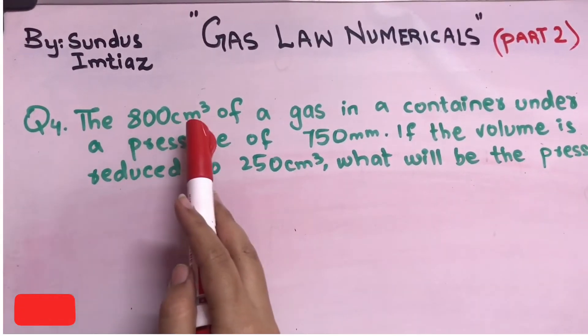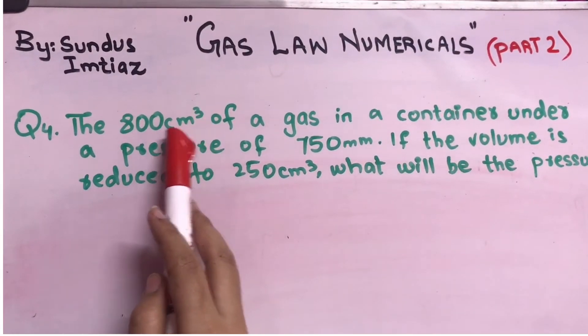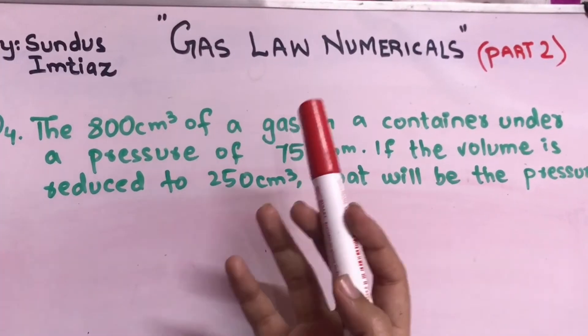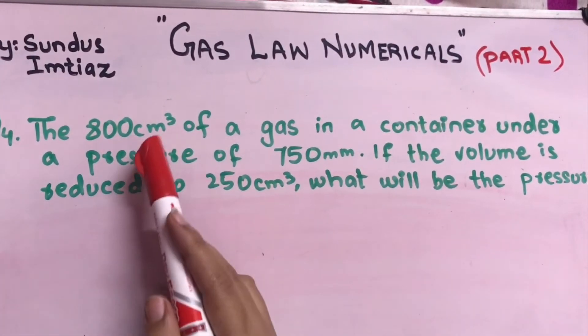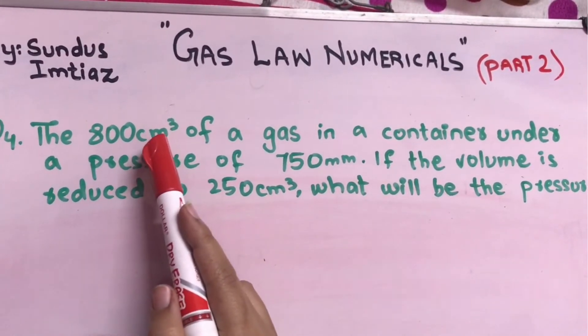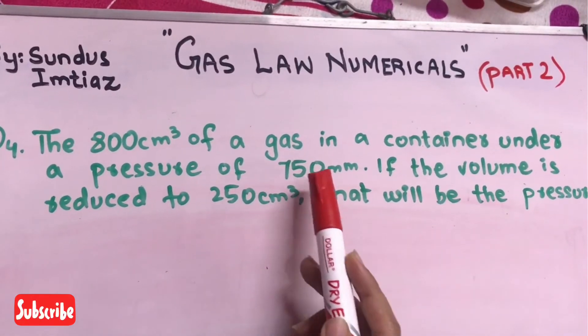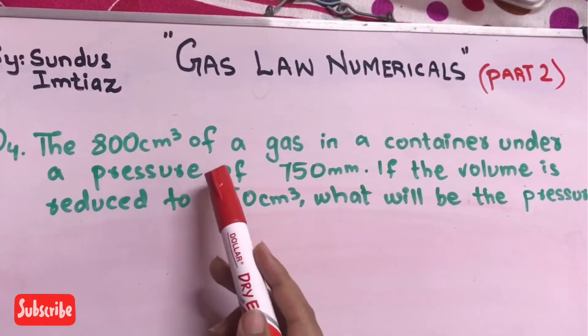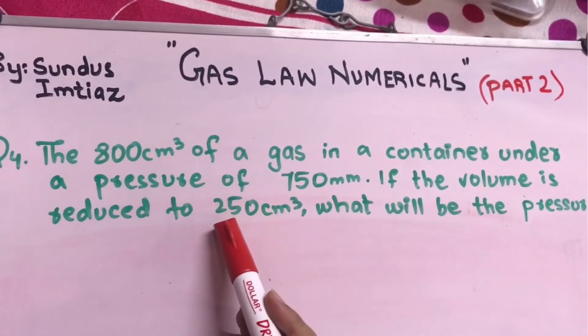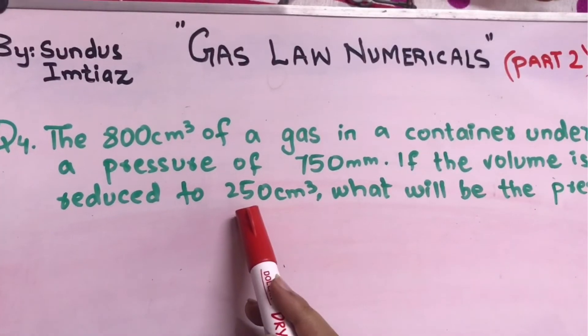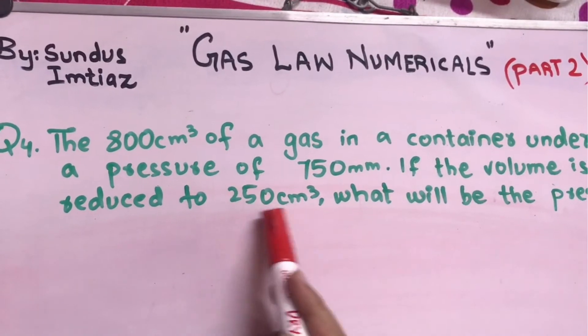Okay, so this is the next numerical. The 800 centimeter cube of a gas in a container under a pressure of 750 mm. We have given the volume. Now how you identified the volume? Because volume has four units in class 9 chemistry: one is ml, second is liter, third is decimeter cube, and the fourth one is centimeter cube. So you have to identify like this with the help of a unit. So volume one is given and p1 is given, they have mentioned the pressure. So 750 millimeters of pressure is given, so v1 and p1 is given here. If the volume is reduced to 250 centimeter cube, means they have reduced from 800 to 250 centimeter cube, they have lowered the volume. Now they are asking what will be the pressure or what will be the final pressure in this volume.